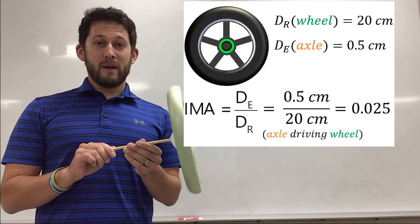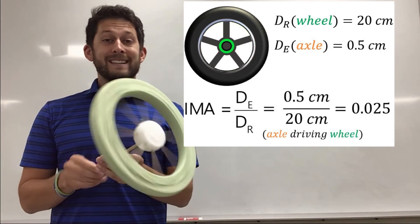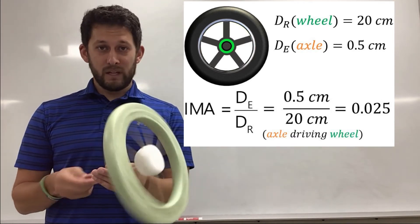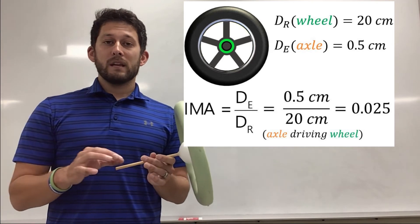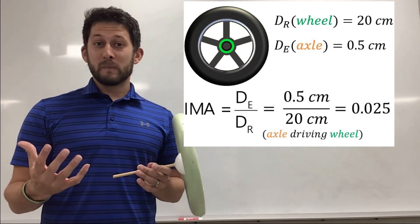Which means I need to apply a lot of force to overcome that resistance, but notice how just a few little twirls that distance is huge. That speed is really really fast. So there may be situations when even though the force isn't being multiplied, your distance or your speed is.